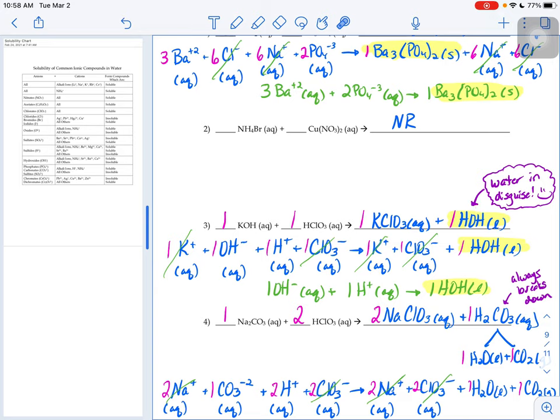You might remember from our balancing chapter that we said sometimes when you're balancing equations and there's water in that equation, it's a little bit easier to figure out the balancing if you rewrote water as HOH. So this HOH is water in disguise. It's okay if you write it as HOH or H2O. I would accept either one on a quiz or a test.